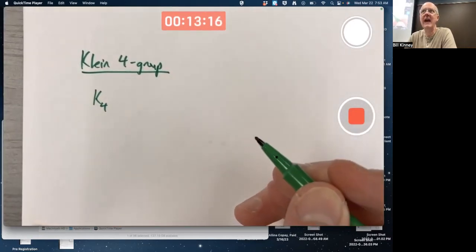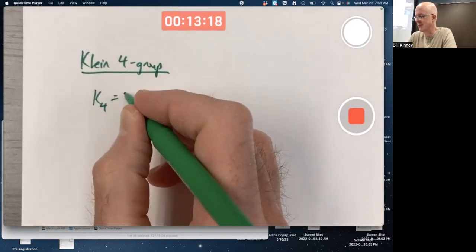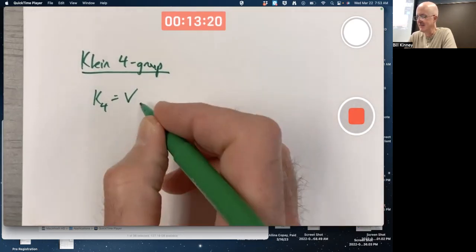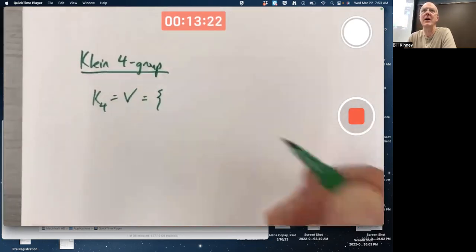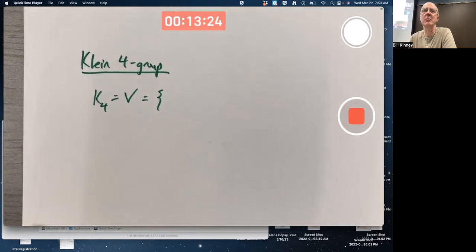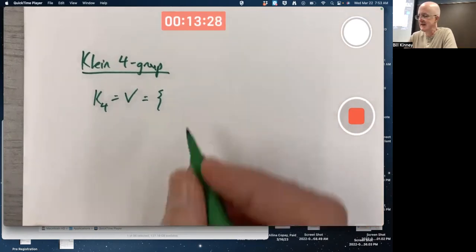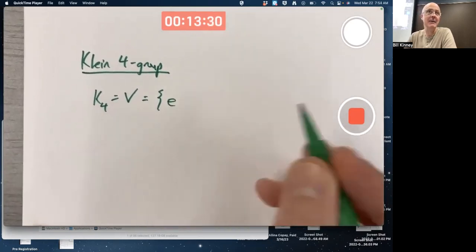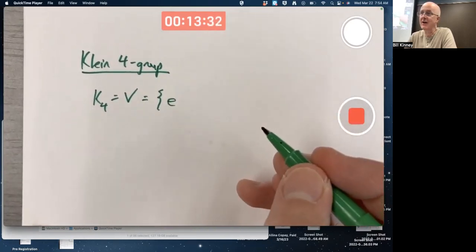Klein-4 group is sometimes called K4, sometimes V. It's going to be a group with four elements. The identity has to be one of them - let's call that E.